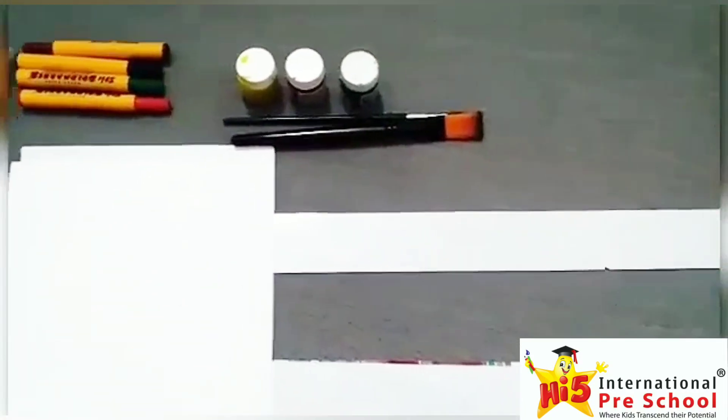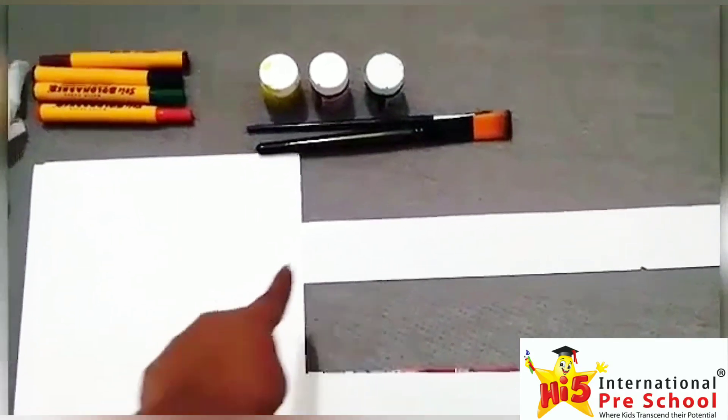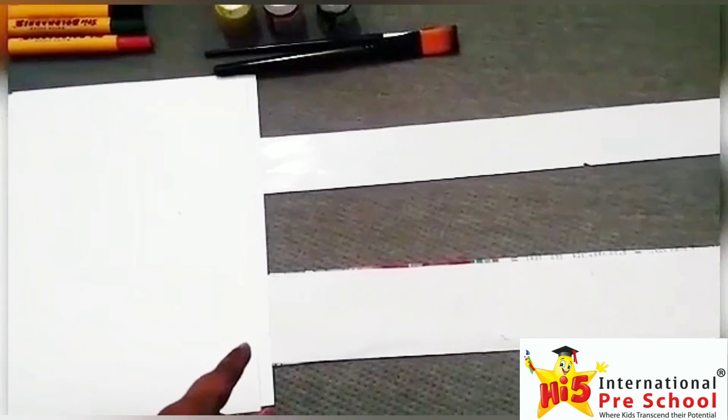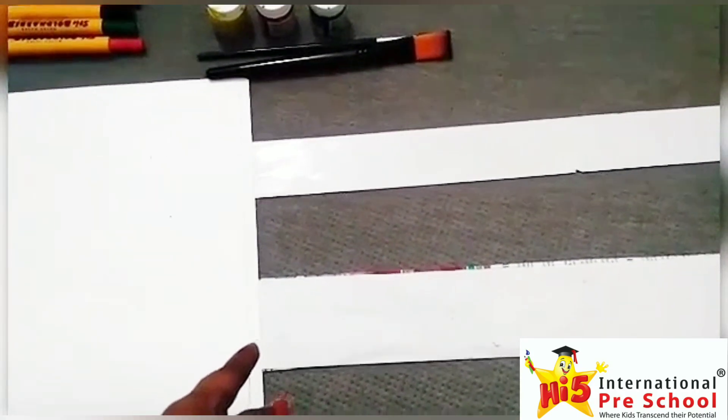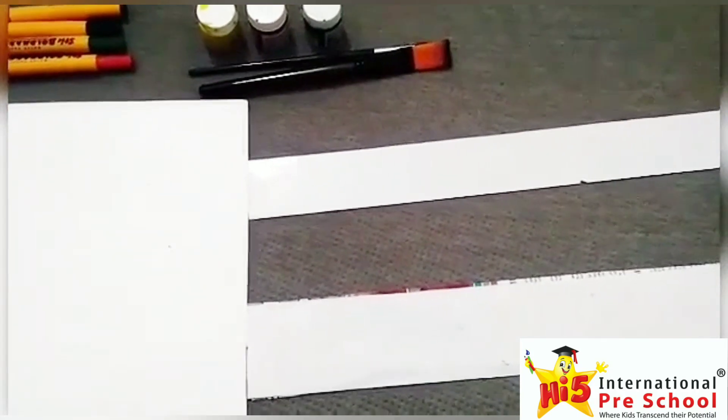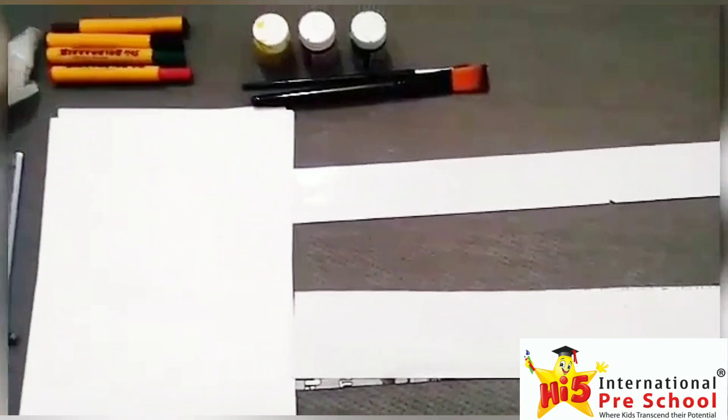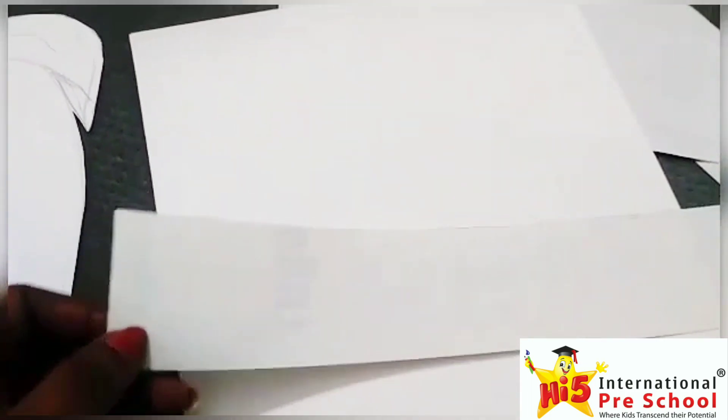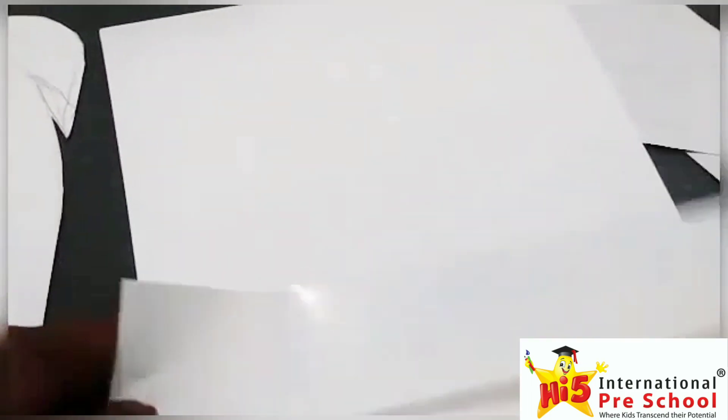If we have long strips of paper, you can take it, one of 4 cm width, another of 7 cm width. These long strips can be taken from a calendar, back side of a calendar can be used for this.